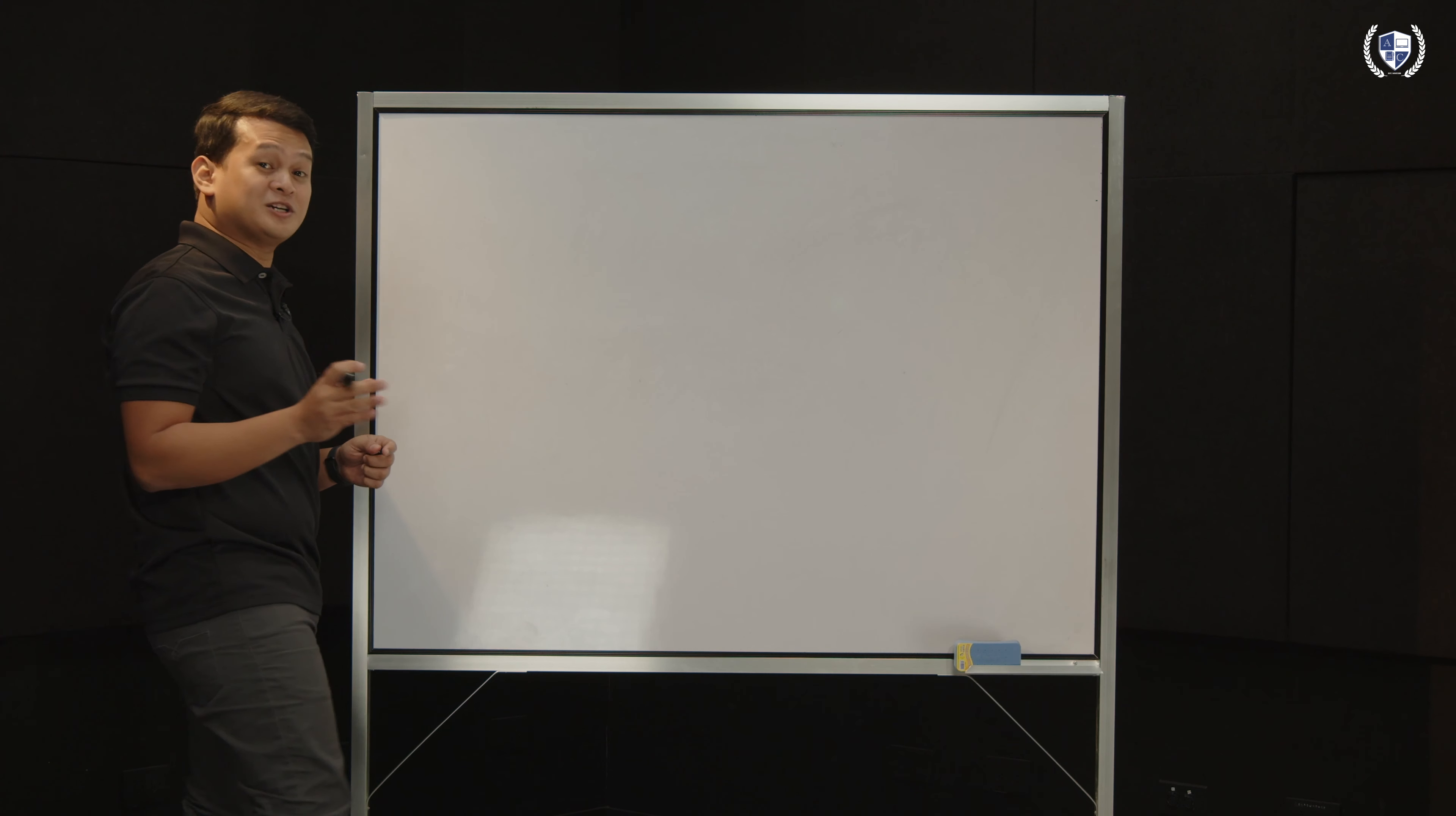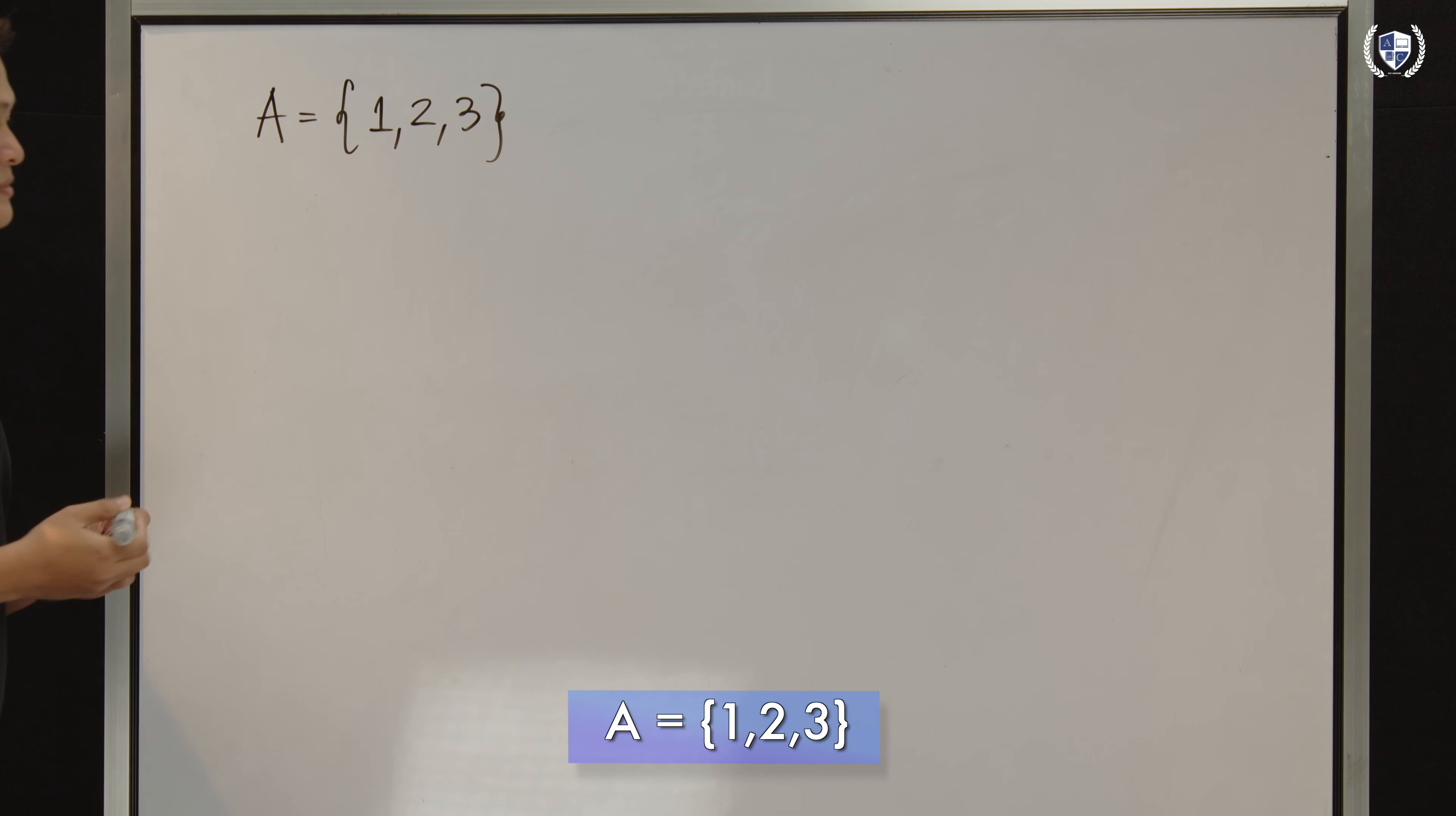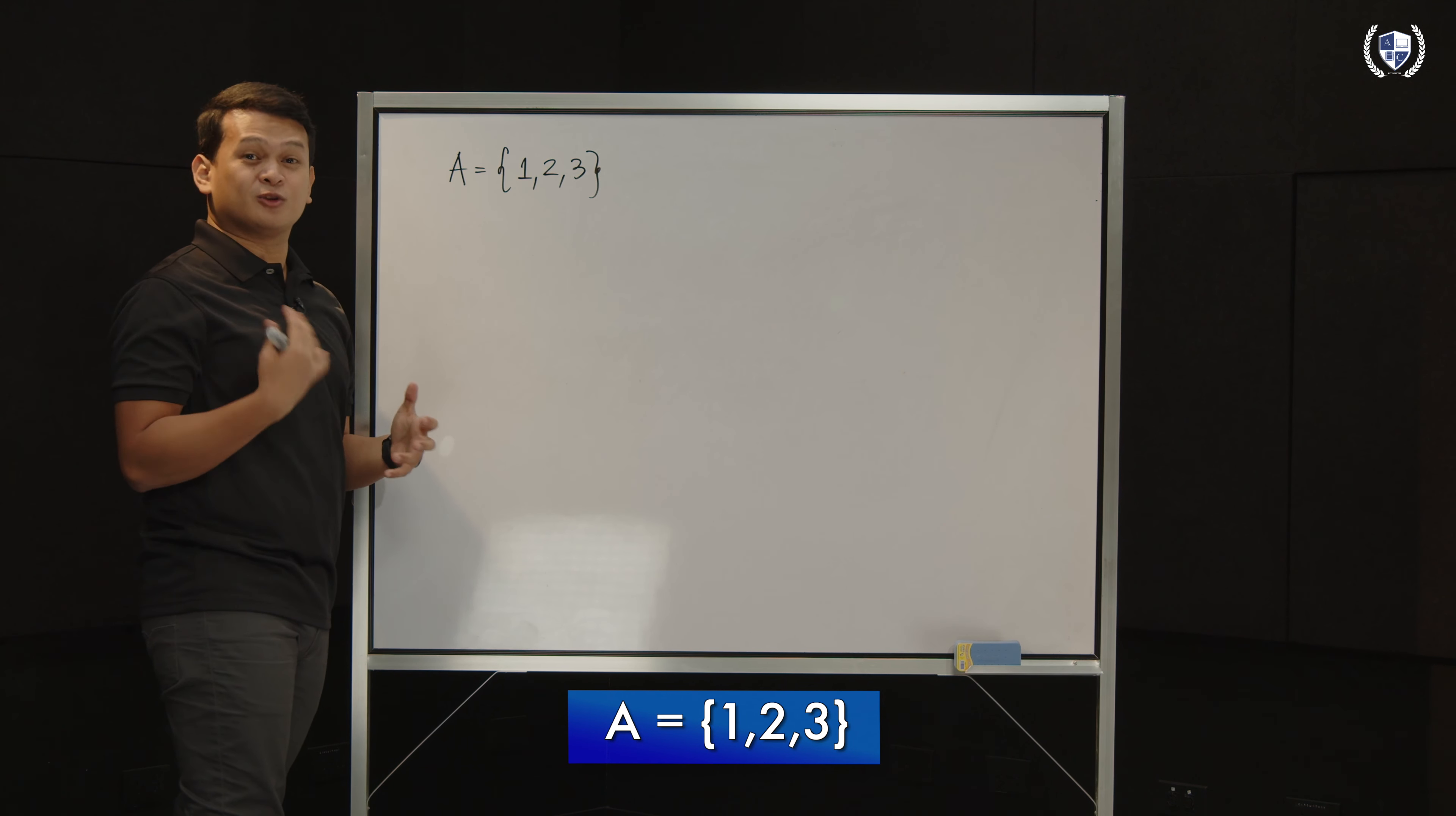So let's have some examples ng mga finite sets. For our first example, let's say set A is the set containing 1, 2, and 3. Is this an example of a finite set? Oo naman, finite eh. Kasi kaya akong bilangin yung laman ng set A. Ilan ang laman ng set A? 1, 2, and 3. And magkakaroon nga tayo ng discussion specifically focused on that, kung ano yung tawag doon sa number of elements in a set.